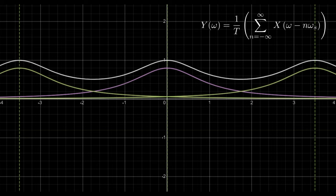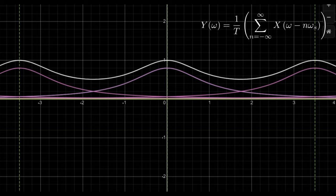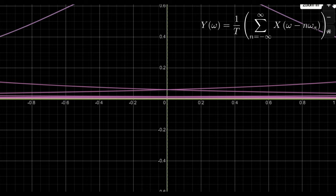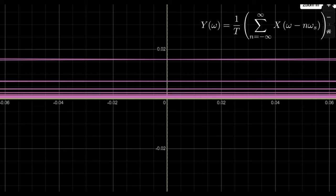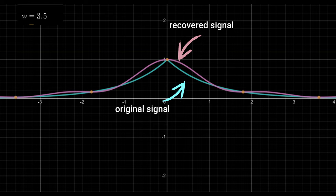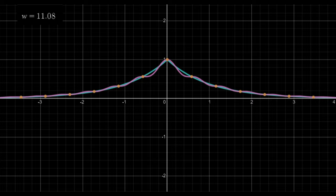For almost all signals, those contributions will become smaller as we increase the sampling rate, but for many signals, they will never completely disappear, no matter how fast we sample. This means that a high sampling rate might give us an approximation for the original signal, but we wouldn't be able to perfectly recover it.